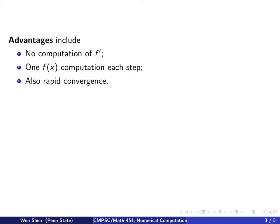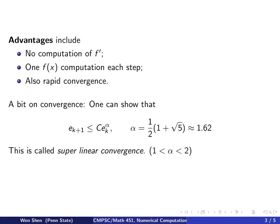So a bit on convergence. One can show the following. The error at step k plus 1 equals some constant times the previous error to the power alpha, where alpha exactly equals this number,